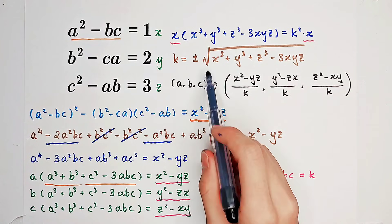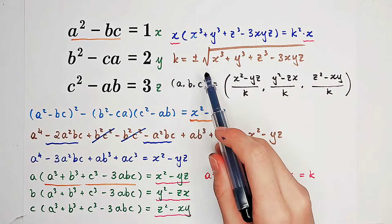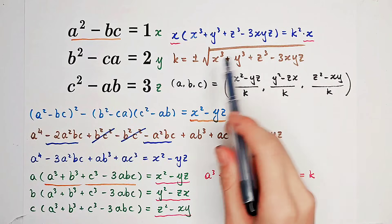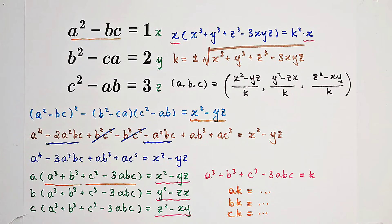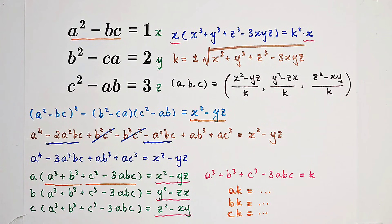k is just positive or negative the square root of this expression. Just substitute the numbers for x, y, and z, and you'll find out two solutions. Did you get them? Give me a thumbs up. Subscribe for more wonderful questions, and we'll see you next time. Bye-bye.